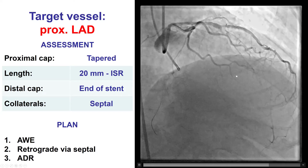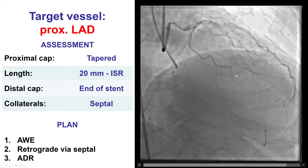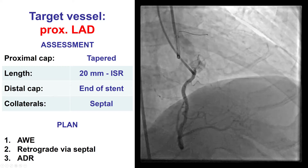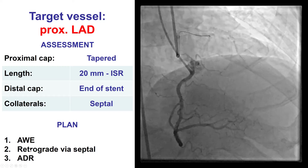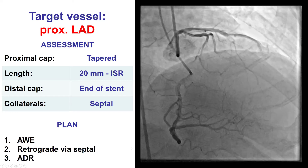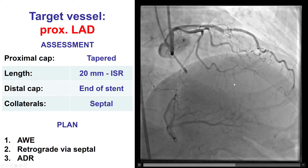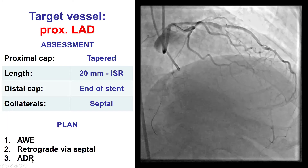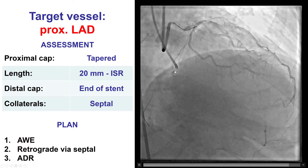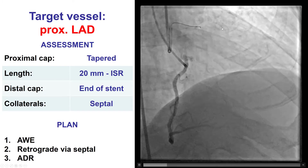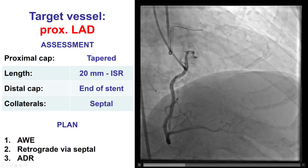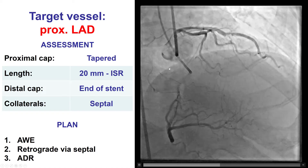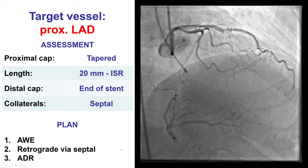Based on those findings, our plan initially was to try first with antegrade wire escalation, followed by retrograde via septal collaterals, and leaving ADR as a last step because of concerns about potentially compromising the patency of the large diagonal branch.